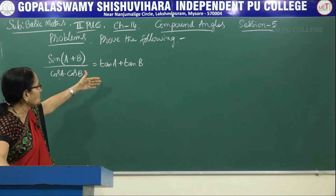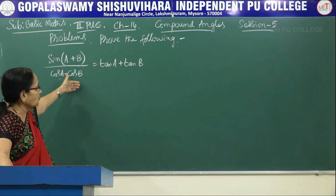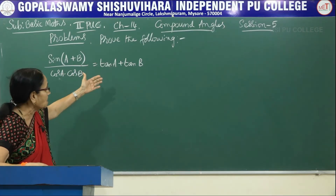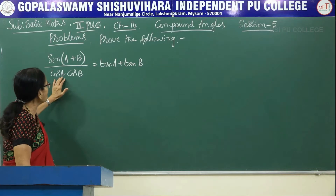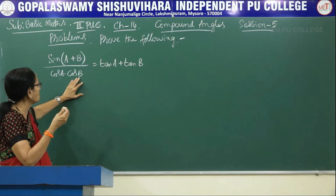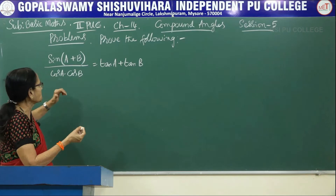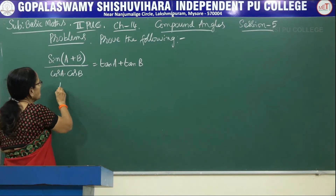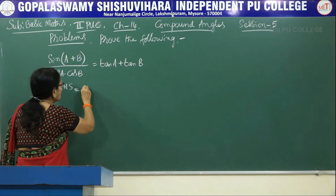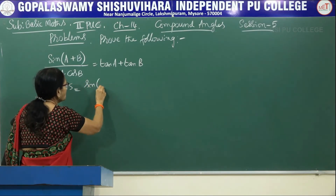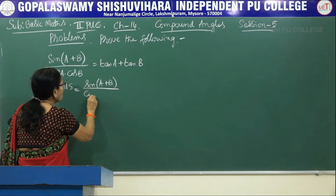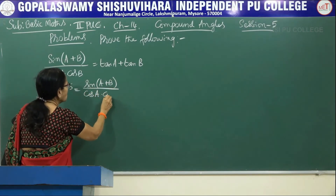The right hand side is in the form of a sum of two tan ratios, whereas the left hand side is a fraction. The denominator is a product of two cosine functions. So we start with the left hand side — the numerator is a compound angle: sin(A+B) divided by cosA·cosB.